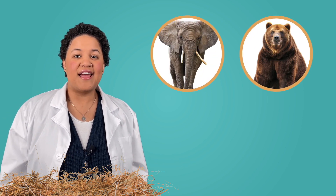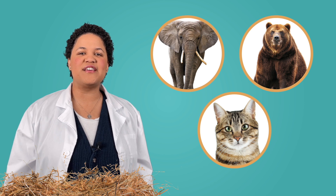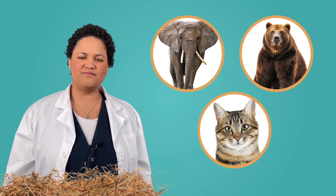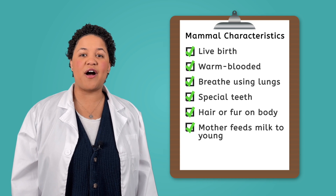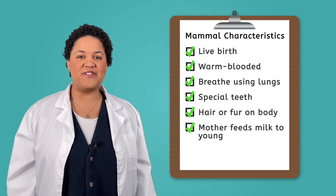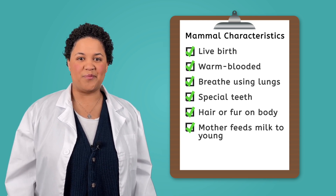Wow! Today we discovered that humans don't lay eggs because we belong to the fascinating animal group called mammals. Just like elephants, bears, and cats, we are warm-blooded creatures who have hair on our bodies and breathe using our lungs. I guess I don't need this nest after all. Let's leave it for some egg-laying creatures to use. Now that you know the characteristics that set mammals apart from other types of animals, try to spot them in your everyday life. You can find mammals at the park, in a book, or even in your own home. As always, remember, science is all around you.